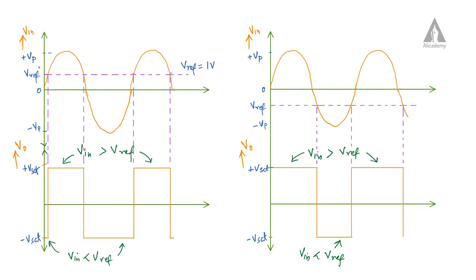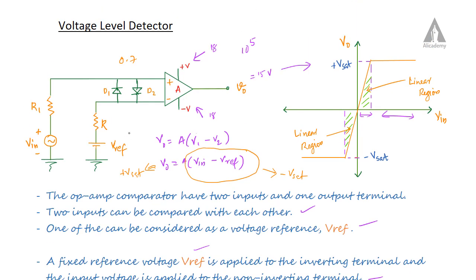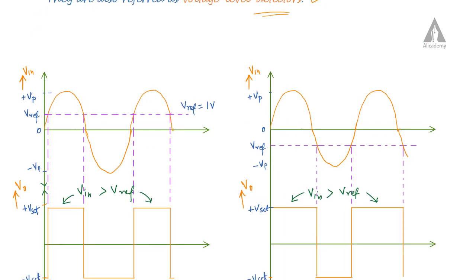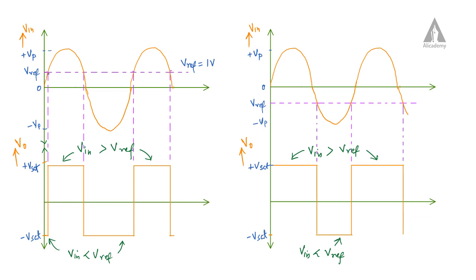The input voltage is a sinusoidal wave starting from 0, reaching a maximum value of plus Vpeak, then decreasing to 0, increasing in the negative direction to minus Vpeak, then returning to 0 and increasing to a positive peak again. The reference voltage Vref is set at 1 volt, represented as a constant horizontal line on the graph.